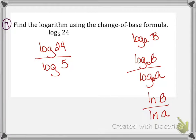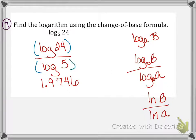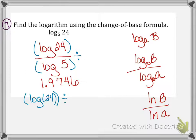The answer we get is 1.9746. Make sure you're entering this in your calculator correctly — put parentheses around numerator and denominator since the fraction bar means division. In your calculator: (log(24)) / (log(5)). If you use the natural log you would get the same thing.